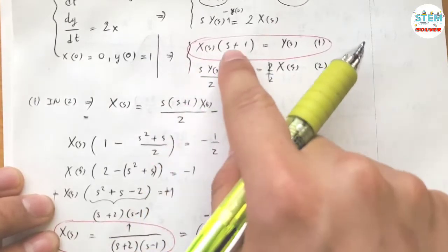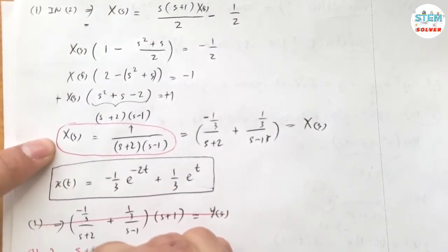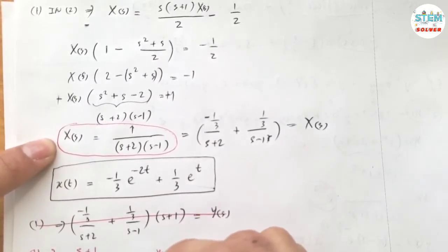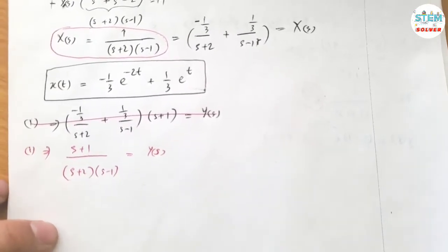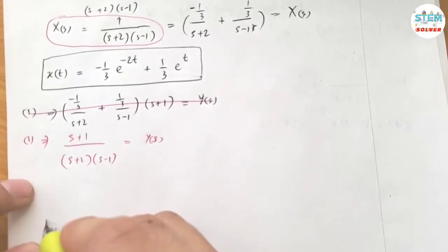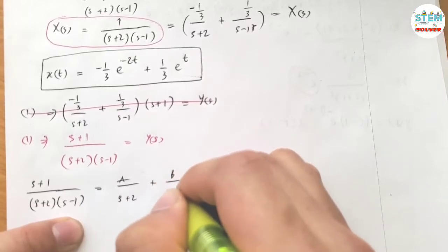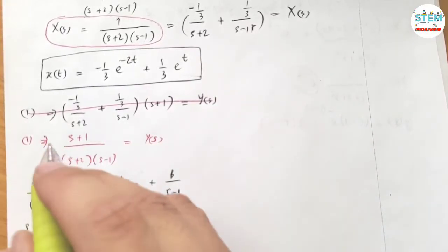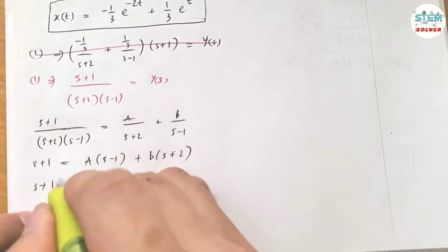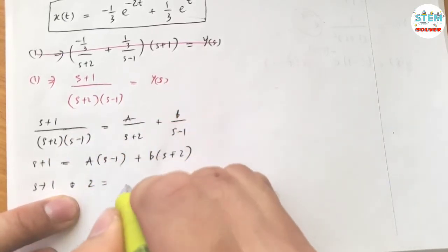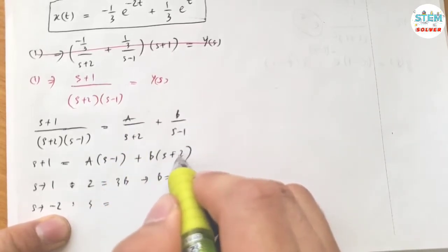So from equation 1 I have s plus 1 over s plus 2 times s minus 1 equals capital Y of s. Now we have a y of s equation. Now solve for this equation. So of course there's no way we can use a shortcut or anything like that. The only method we have left over is using the partial fraction decomposition method. So using that method I have a over s plus 2 plus b over s minus 1. So multiply both sides by this LCD. I have a times s minus 1 plus b times s plus 2.